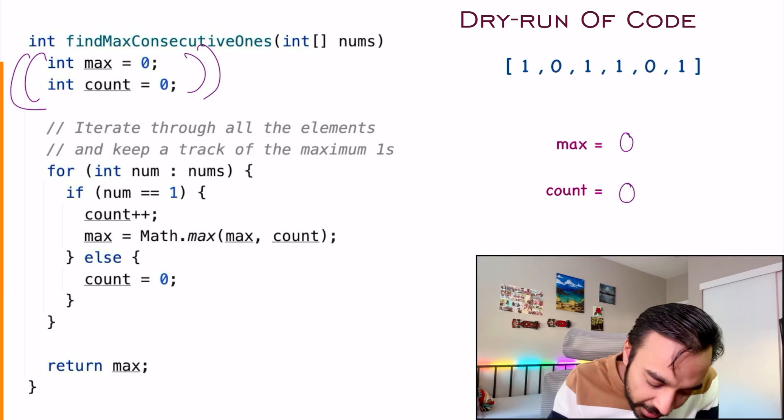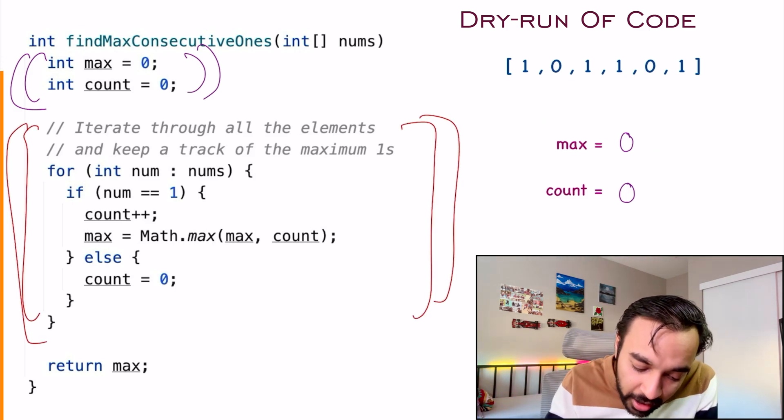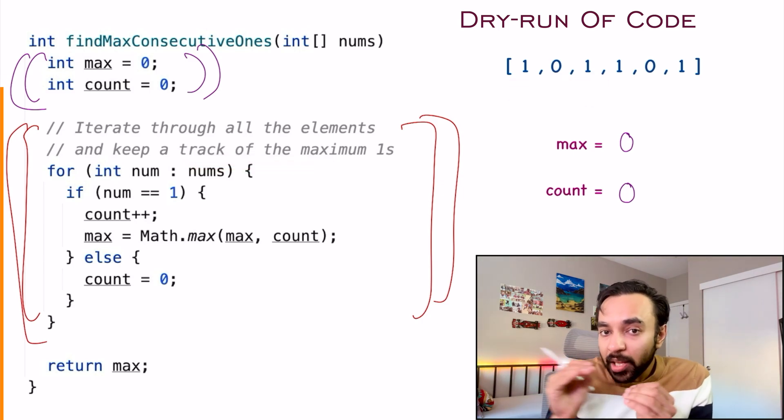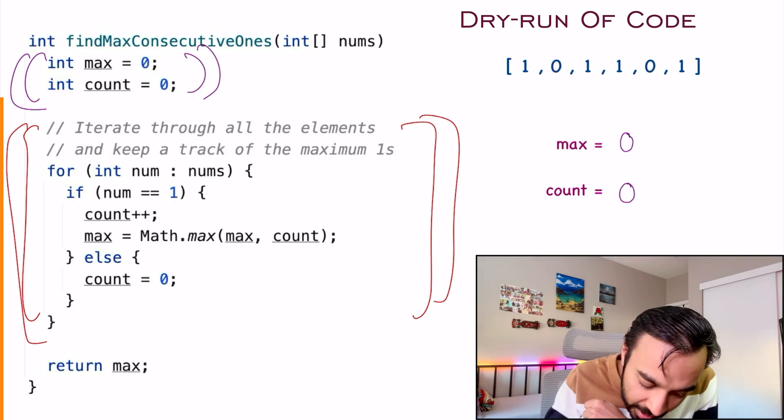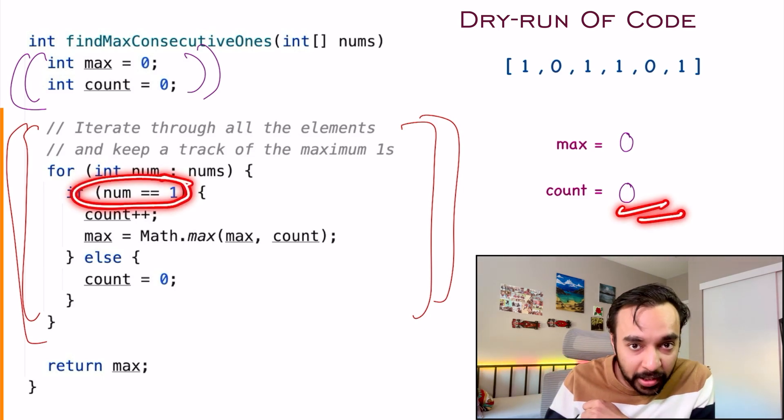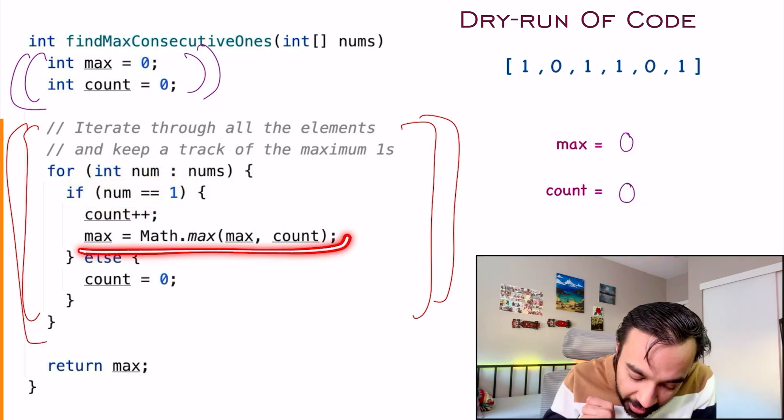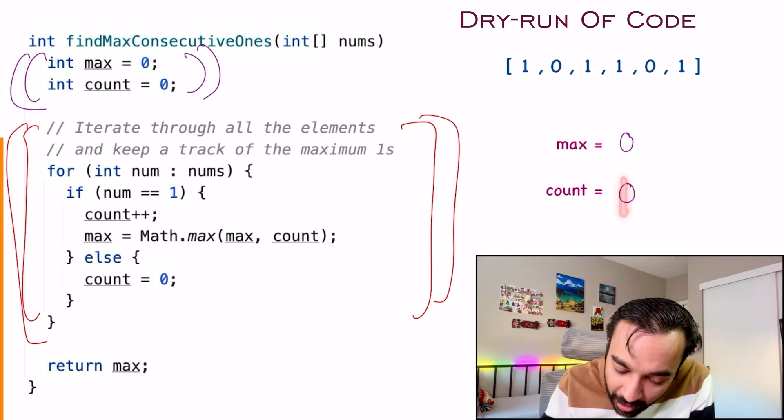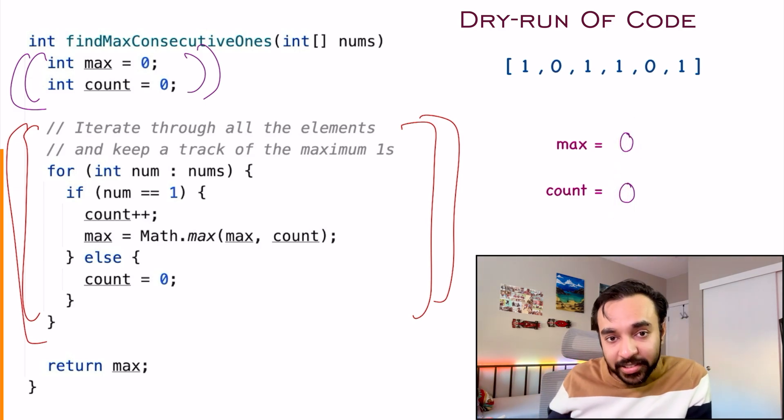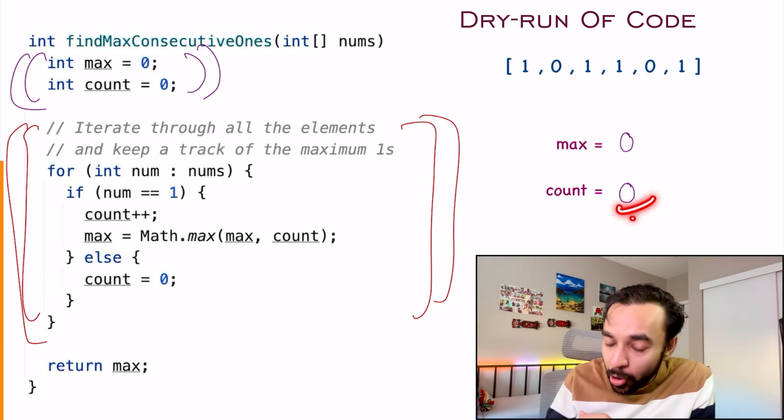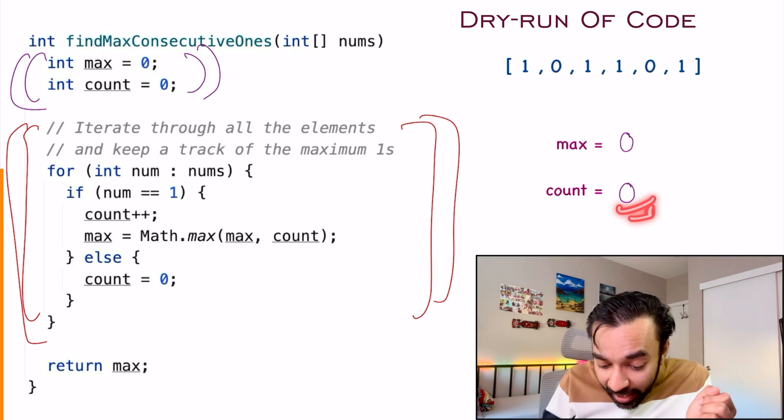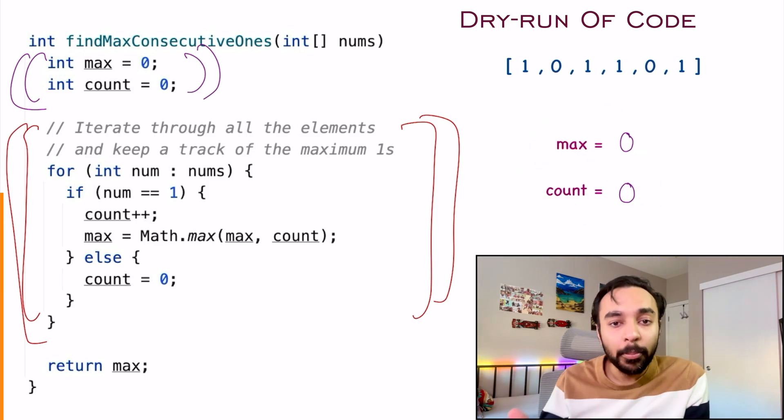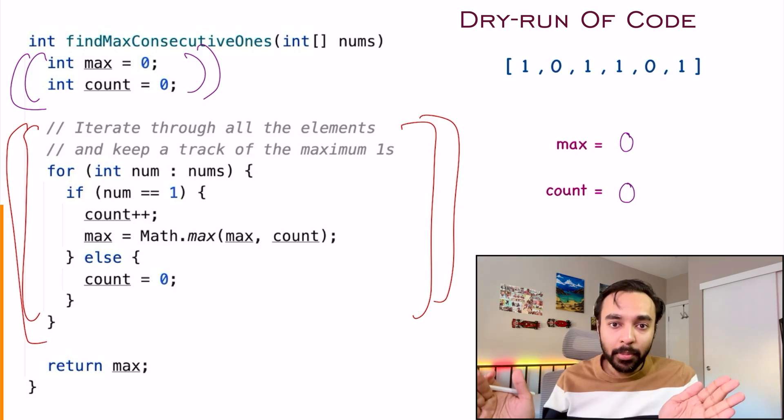And now, what you do next is you start a for loop where you iterate over each of the element. You iterate and then keep a track of all the maximum ones. So what are we doing over here? If the number is one, then we do a count plus plus. And at the same time, we update our max value. So what happens is, if the count becomes one, the value of max also becomes one. So what happens is, as I am scanning the array, this value of count will increase, correct? And at any moment, if this value becomes larger than the max value, then you have to update the max value, correct? Because those are the maximum number of ones.